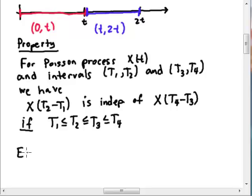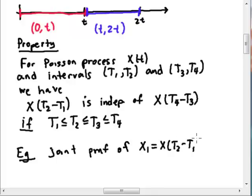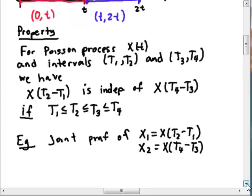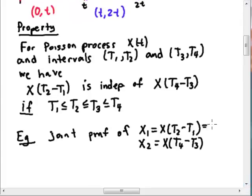And so when I want to write the joint PMF, what is the joint PMF of X1, that is X of T2 minus T1, and X2, T4 minus T3, which in this case both happen to be X of t, they're going to have the same PMF.